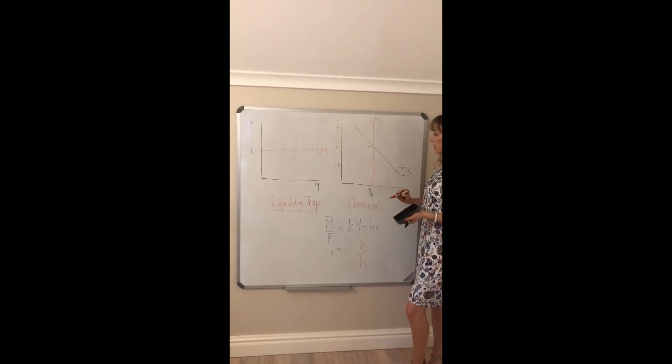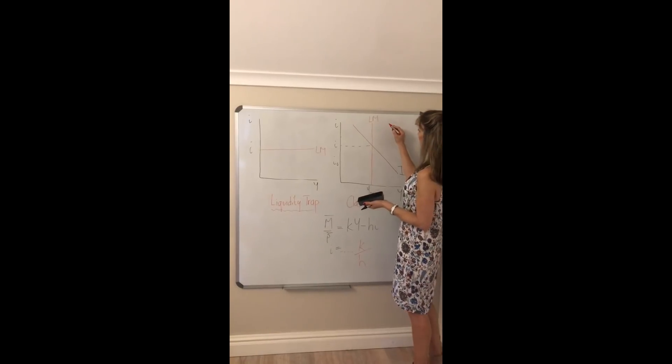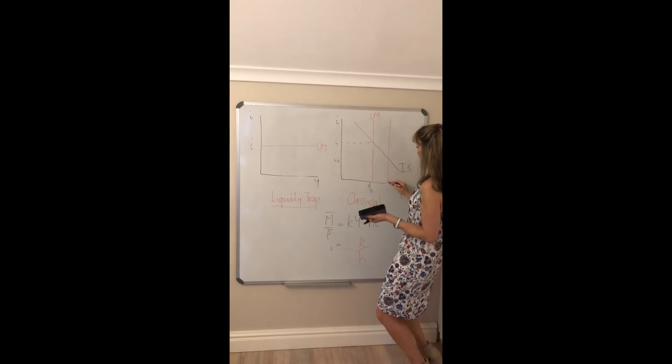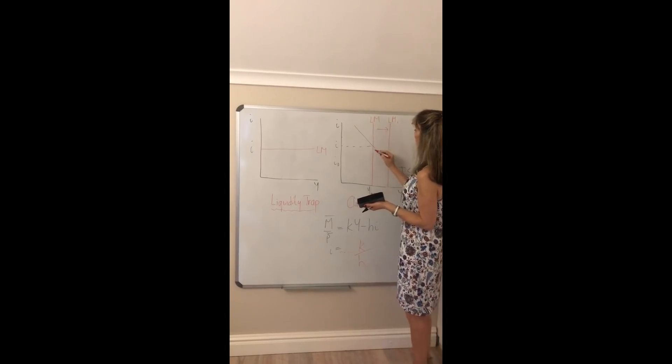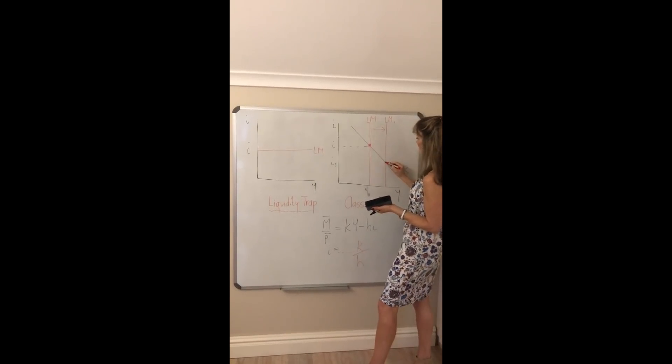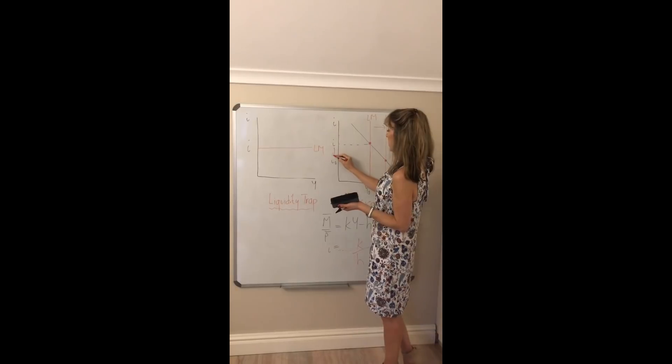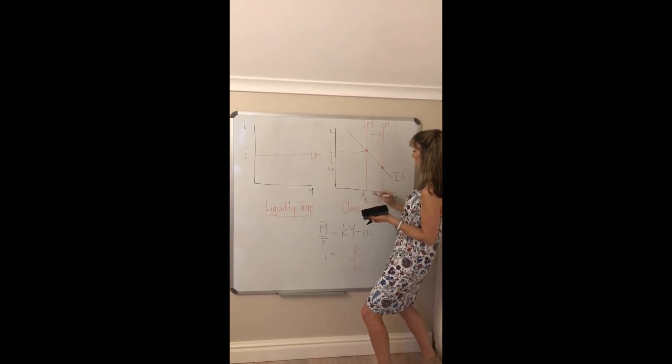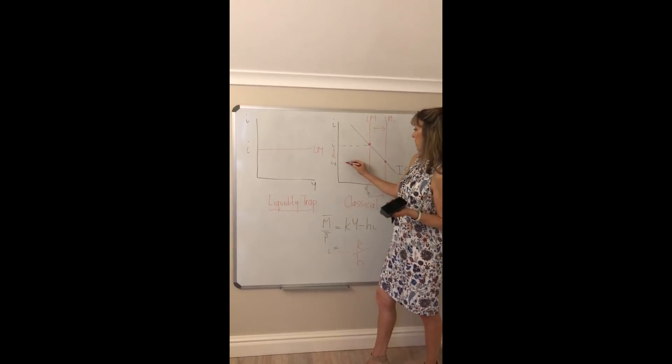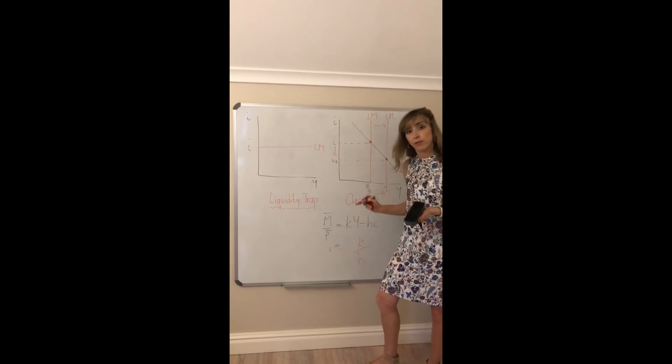As opposed to the classical situation, where your LM curve is vertical, and if the money supply were to increase, we see that your LM curve shifts to the right, and that brings about a substantial change in interest rates and income or output for the economy. And so monetary policy is highly effective in that instance.